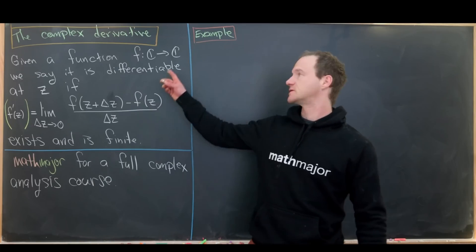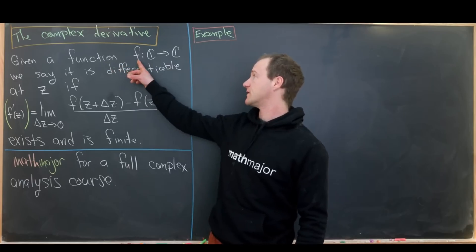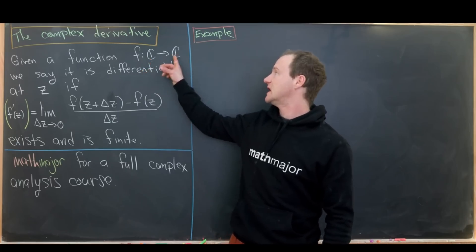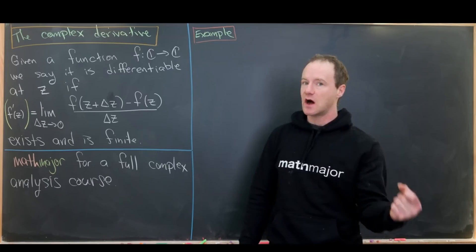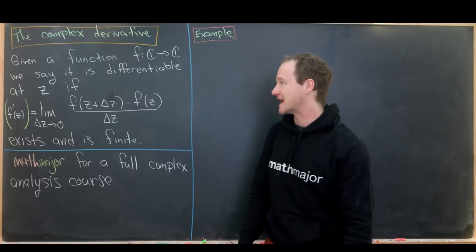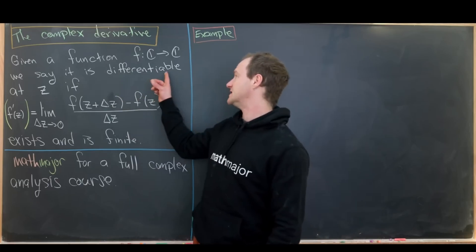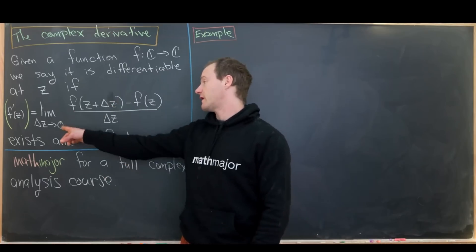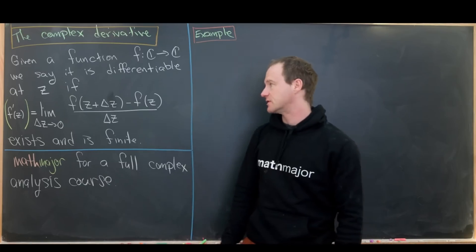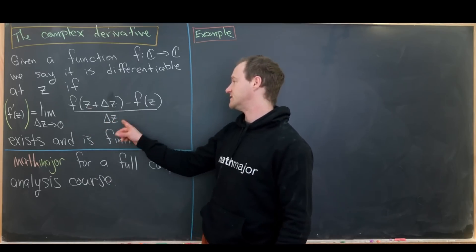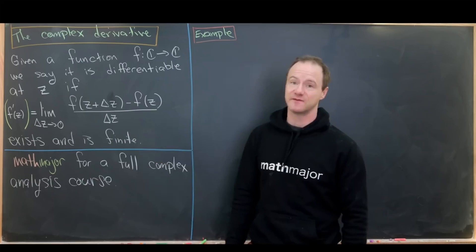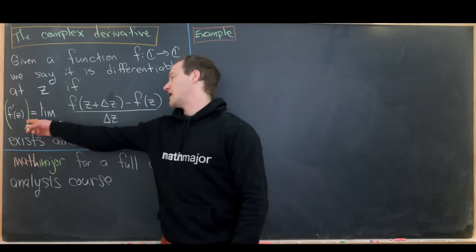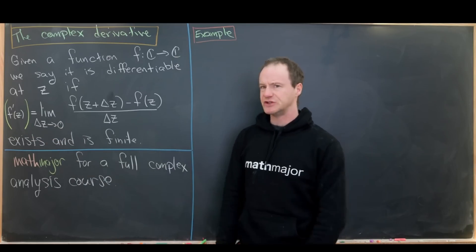So let's look at a definition first. We're given a complex function whose domain is C — really like a subset of C — and its codomain is C, so it takes complex numbers as inputs and provides complex numbers as outputs. We say that it is differentiable, or complex differentiable, at a point Z if the limit as delta Z goes to zero of [f(Z + delta Z) − f(Z)] / delta Z exists and is finite. In that case, we call it f prime of Z, just like in regular calculus.